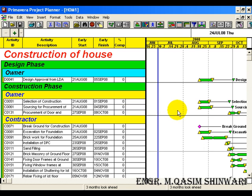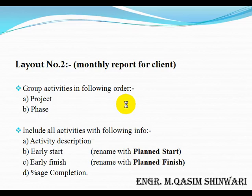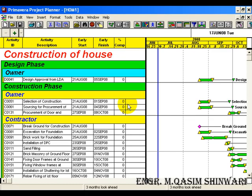So in this way you can customize your layouts. That was our first layout. Now coming to the second layout — in our second layout we are going to group the activities in the order of project and phase only, while we will be having columns of activity description, early start, early finish, and percentage completion. But early start will be renamed as 'Planned Start' and early finish will be renamed as 'Planned Finish'. So let's start.